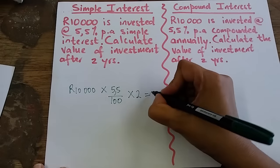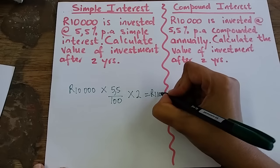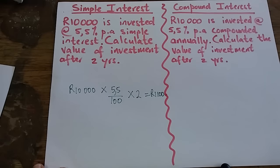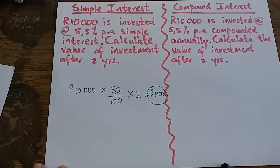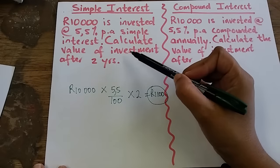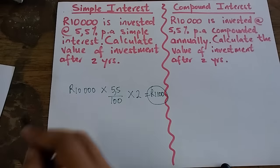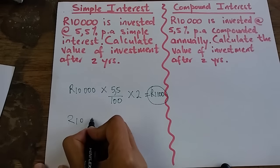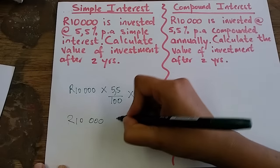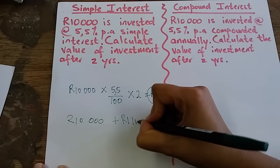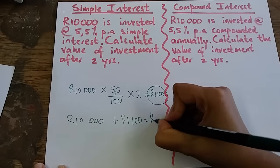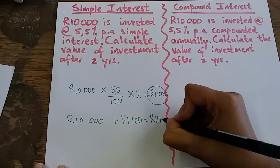Using the calculator, the answer is R1,100. This value represents interest only. To get the value of the investment after two years, we add R10,000 plus R1,100, giving us R11,100.